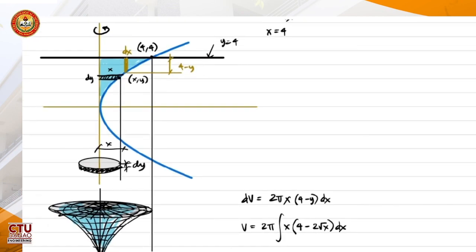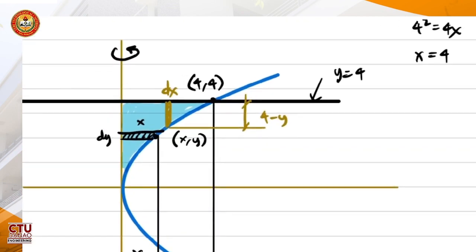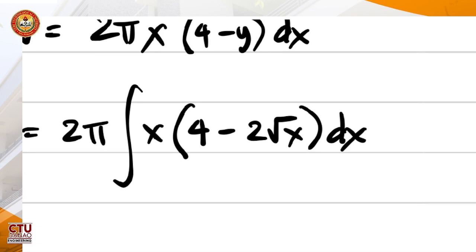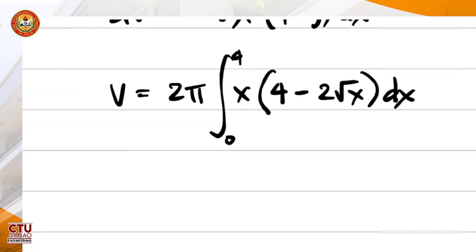Since we have y squared equals 4x, y is just 2 square root of x. So 4 minus 2 square root of x dx. From this time, the boundary is from this point, which is 0, 4. So from 0 to 4.